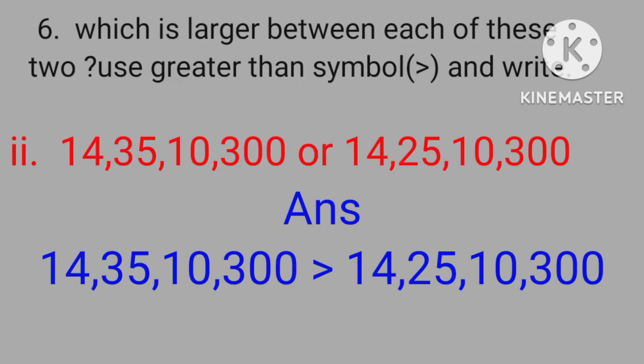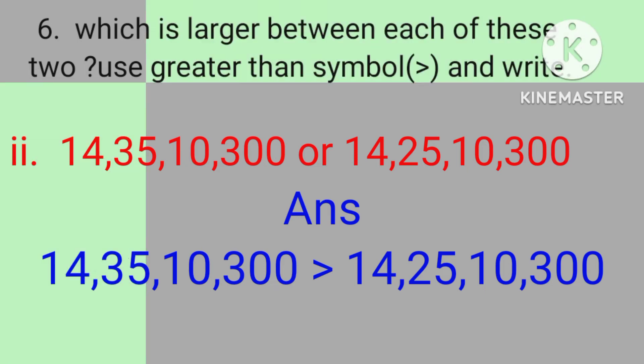Second one: fourteen crores thirty-five lakhs ten thousand three hundred, or fourteen crores twenty-five lakhs ten thousand three hundred. Which is the bigger number? Fourteen crores thirty-five lakhs ten thousand three hundred is the bigger number. We need to write the bigger number first, then the smaller number, using the greater than symbol.